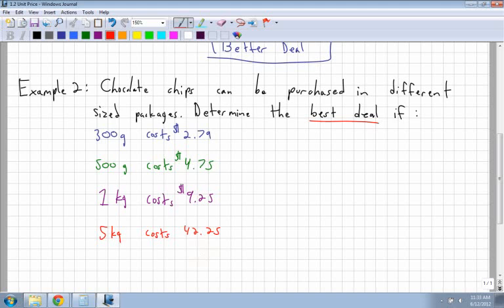Now you have to kind of figure out, well, what am I going to be comparing? Am I going to find the cost per gram? Am I going to find the cost per kilogram, right? Because I have a bunch of different stuff here.